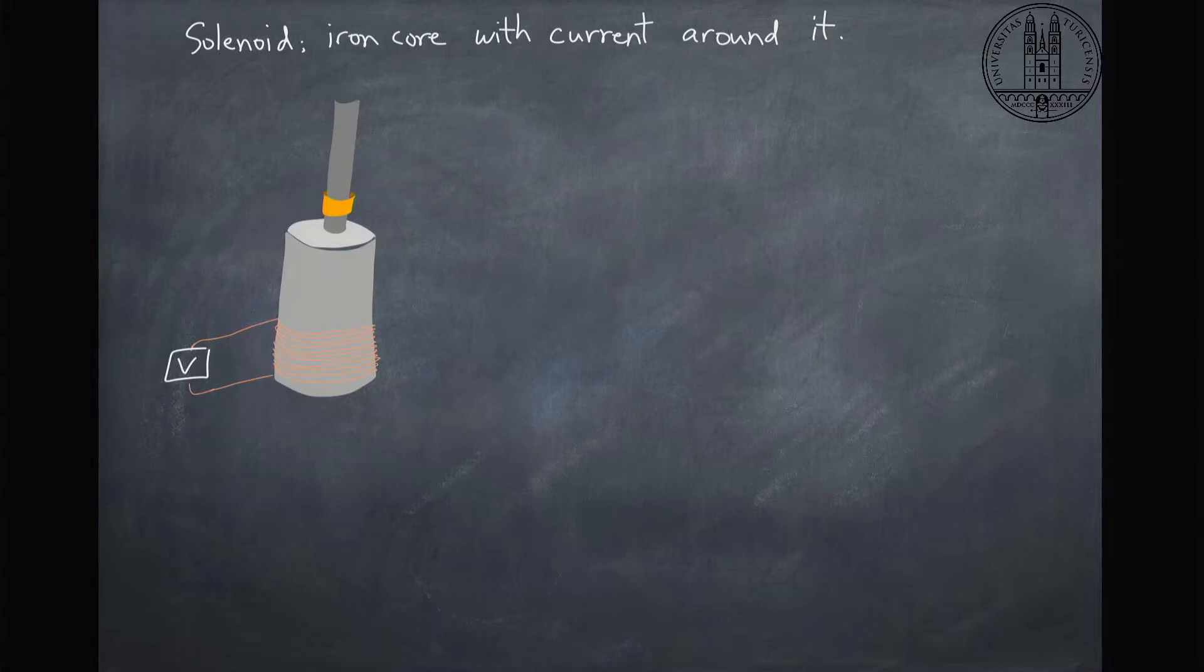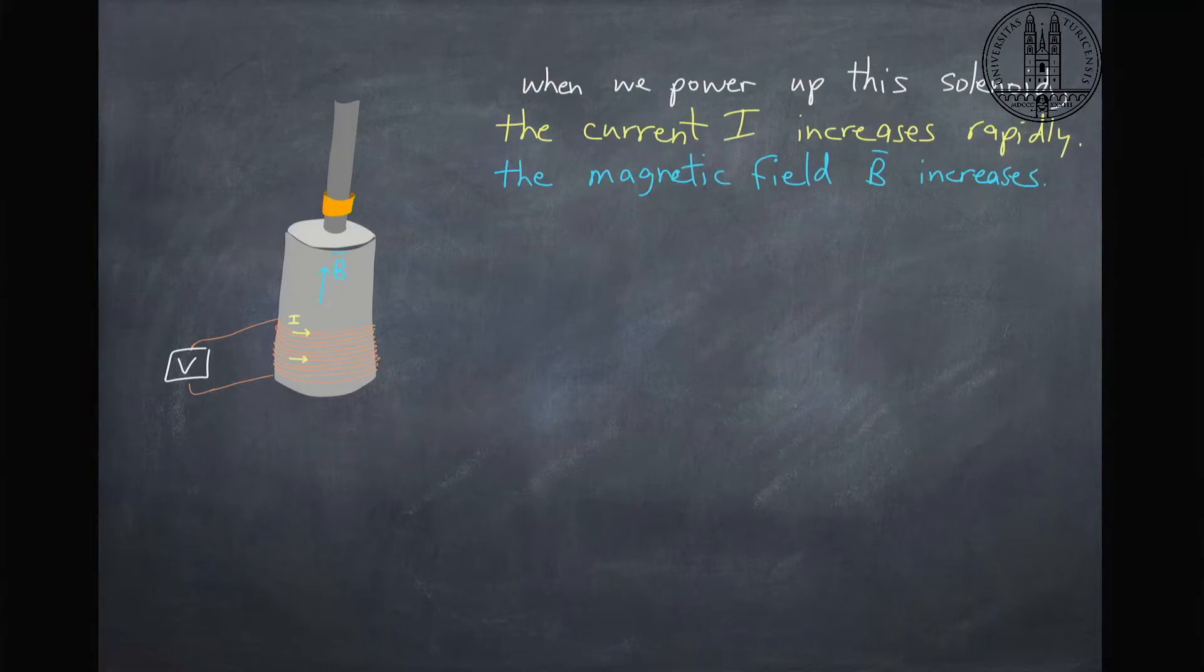So what this is is actually a solenoid. We're going to put a voltage through this coil of wires around this metal core here and this is called a solenoid. And what happens is when we stick an electric current around these loops here it's going to generate a magnetic field pointing up.